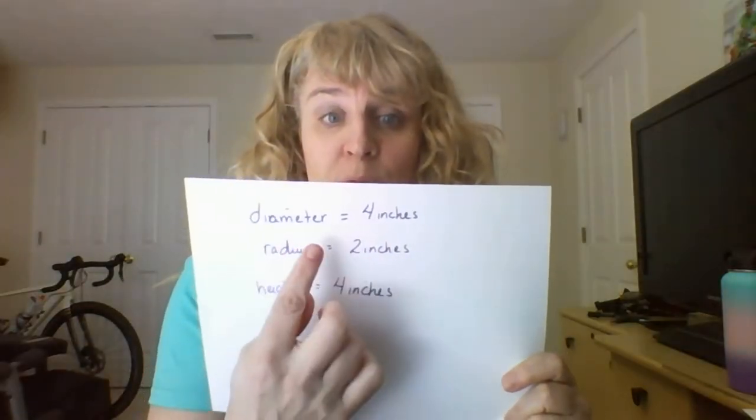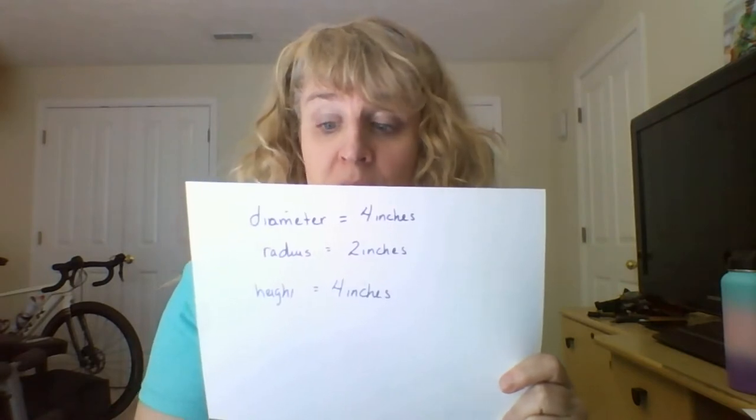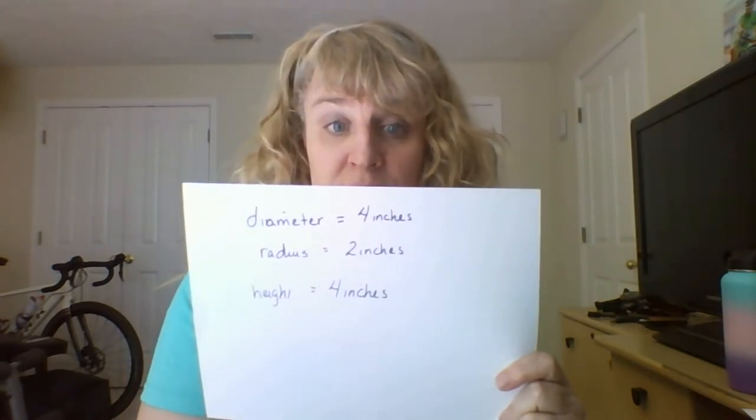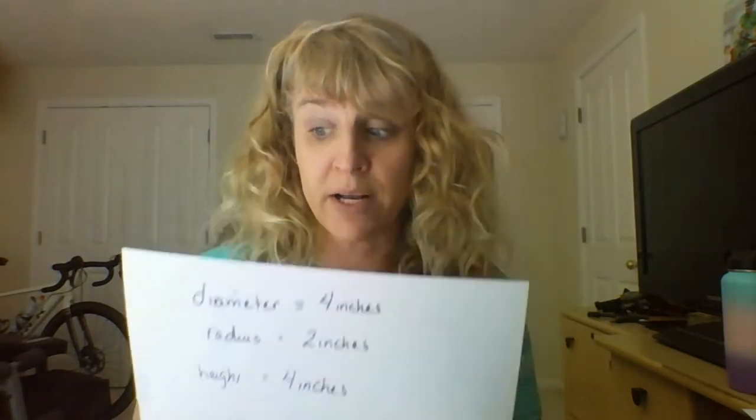Now we've got to measure the height. I measure down and I also see that this is 4 inches. So it has an opening of 4 inches and a height of 4 inches. To review: the diameter is 4 inches, half the diameter gives us a radius of 2 inches, and the height is 4 inches.